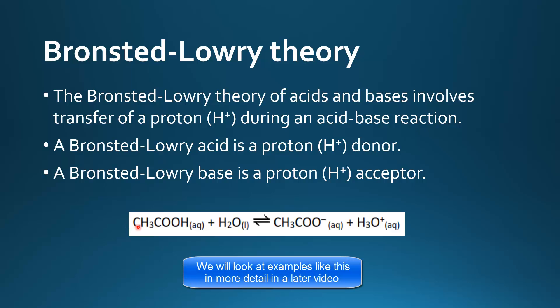So here we have an example, this is ethanoic acid and water. The ethanoic acid has donated a proton to the water, so it's become CH3COO negative because it's lost this proton and the water has accepted the proton to become H3O plus. So the ethanoic acid is the Bronsted-Lowry acid and the water is the Bronsted-Lowry base.